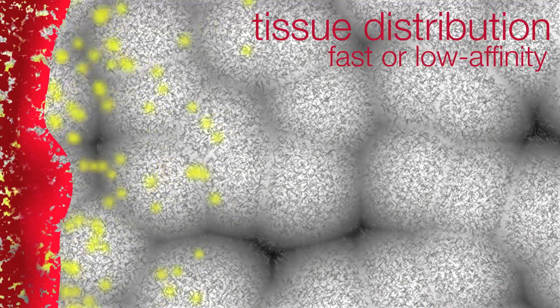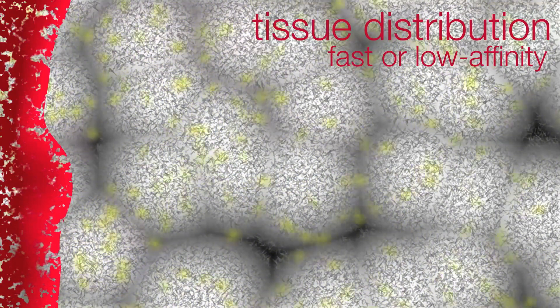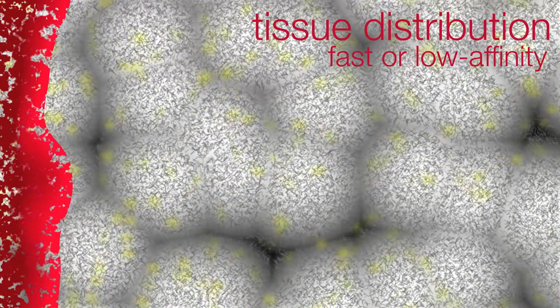Increasing penetration has been attempted by degrading the extracellular matrix to increase diffusion speed. As it turns out, particles that are fast or that don't bind very strongly to their environment will be able to penetrate deeper into the tissue.